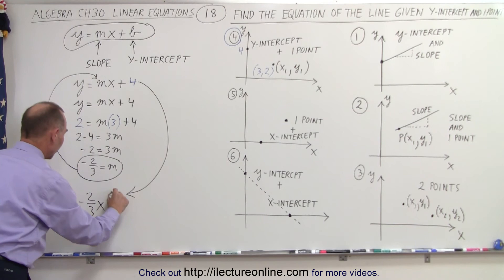And that is how we find the equation of a line if we're given the intercept and one point. That is how it's done.